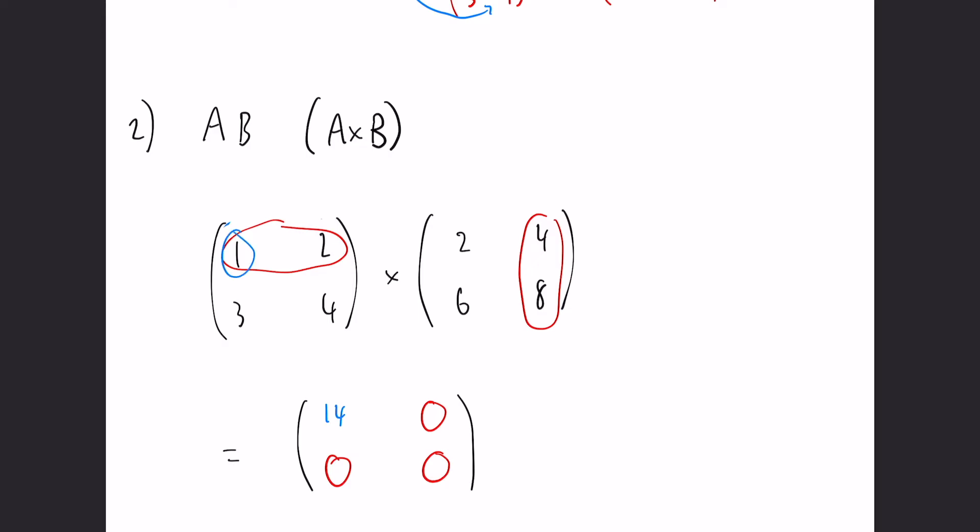We multiply 1 times 4 and add that to 2 times 8. So 1 times 4 is 4, 2 times 8 is 16, giving us 20 overall. If we repeat that for the bottom row, we use 3 and 4. The bottom row of the first matrix and the first column of the second matrix gives us our bottom left value.